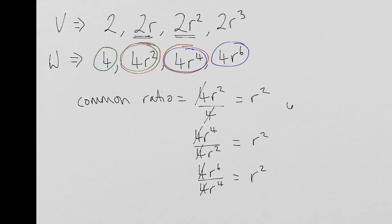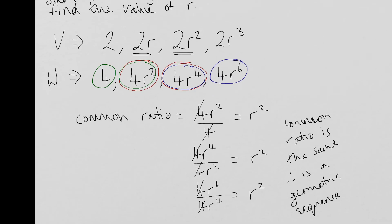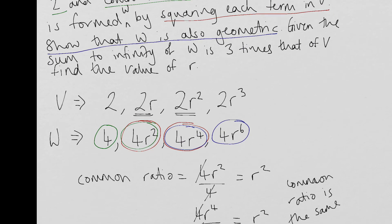So I would say common ratio is the same. So W, therefore, is a geometric sequence. OK, so that's the first part of the question actually answered. So I'm going to just give that a little tick to say I've done it.